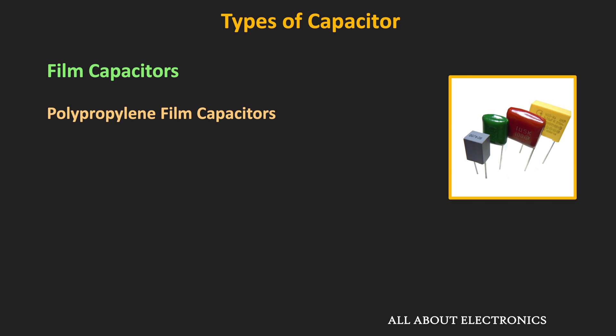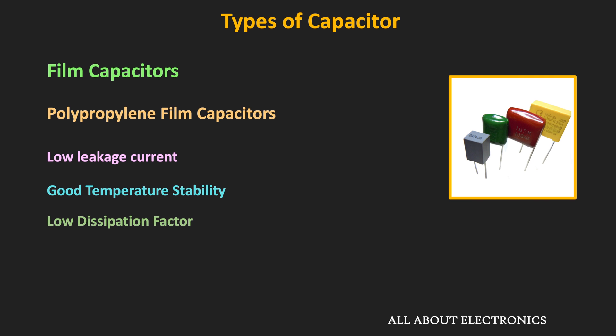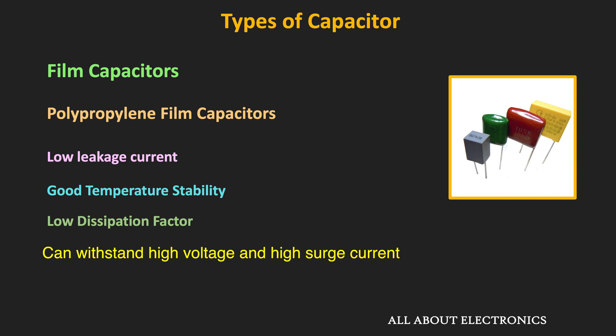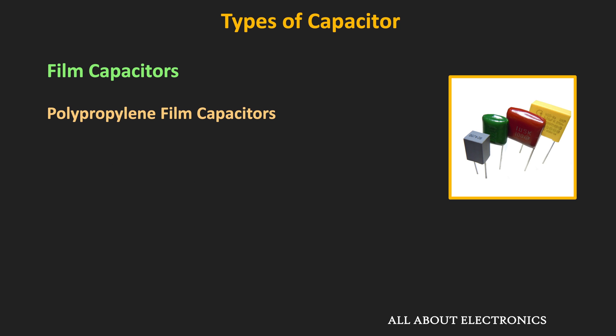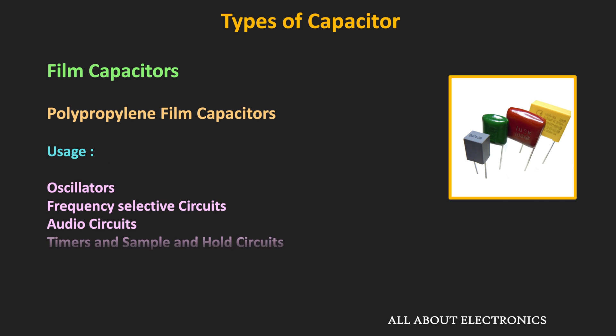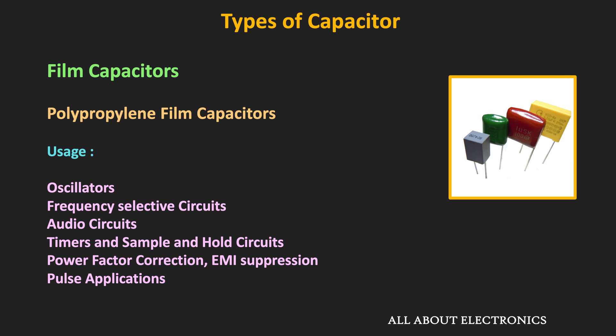Polypropylene film capacitors have very low leakage current, very low dissipation factor, and good temperature stability. They can withstand very high voltage and high surge current and are one of the most widely used film capacitors. However, due to the lower permittivity of polypropylene, they are larger in size compared to other capacitors for the same capacitance and voltage rating. They are used in oscillator and frequency selective circuits where precise capacitance is required. Due to their lower leakage current, they are also used in timing and sample and hold circuits. In power electronics, they are used for EMI suppression and power factor correction.